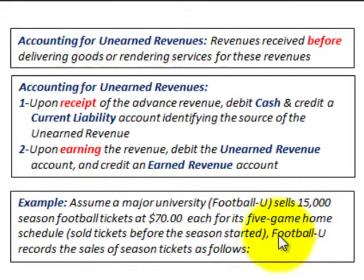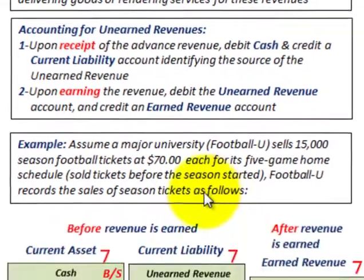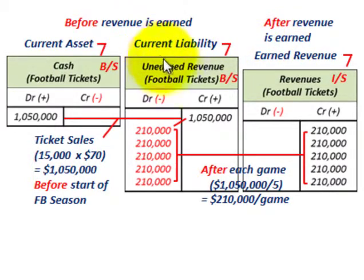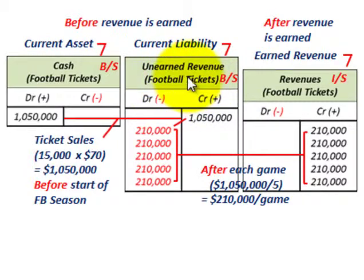Now what we have to do is look at how Football U records the sales of these season tickets. We have to isolate the revenue before it's earned and also the revenue after it's earned. So we set up three accounts. We're going to have a current liability account — we'll call that an unearned revenue account and identify it as football tickets. And then we're going to have a current asset account, cash, which they receive for these tickets sold before the season started, also identified as football tickets.